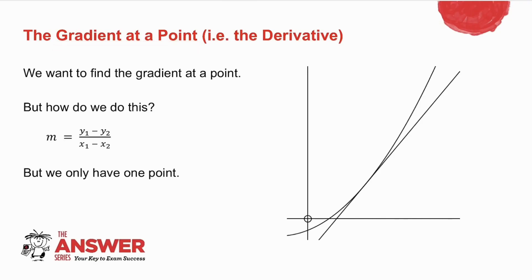Now the fancy word for gradient is a derivative. So if you're asked to find the derivative of a graph, you are actually finding the gradient. So what we want to do is find the gradient at this point. In other words, we want to get the gradient of the tangent to the graph at that point.